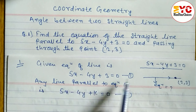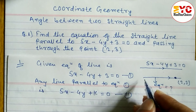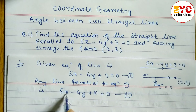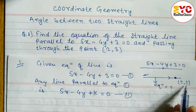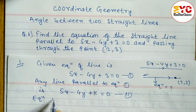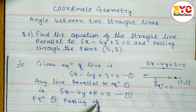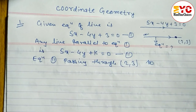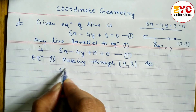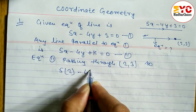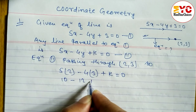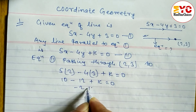Equation two represents the parallel line we need to find. This line passes through the point (2, 3), so we substitute x equals 2 and y equals 3 into equation two. We write: 5 times 2 minus 4 times 3 plus k equals zero, which gives 10 minus 12 plus k equals zero.